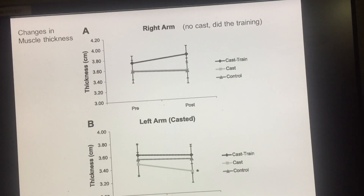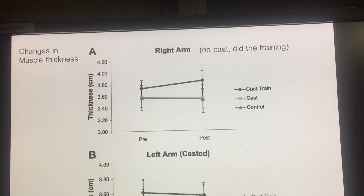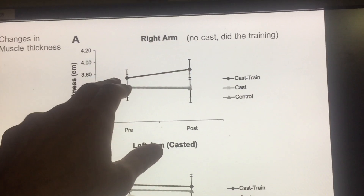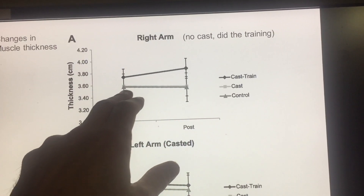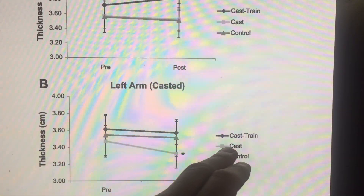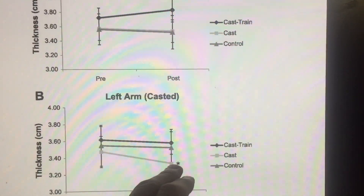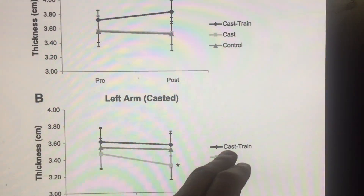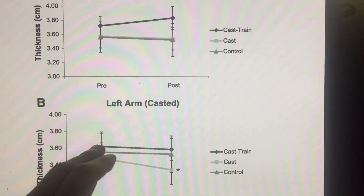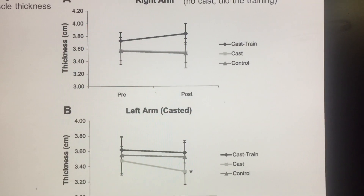These next graphs are really interesting — they show changes in muscle thickness or muscle size with the program. For the right arm that trained, the trained group went up a bit in muscle size while other groups stayed the same. On the casted side, the group that did no training saw a decrease in muscle size of the left arm, and the strange result was that right arm training prevented loss of muscle size in the casted left arm.